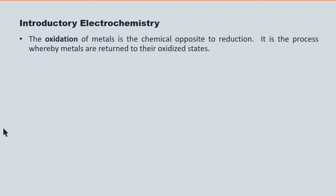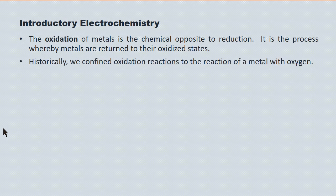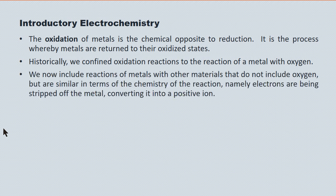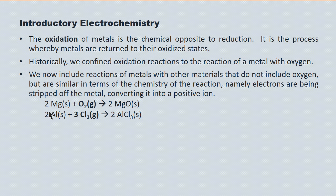The oxidation of metals is the chemical opposite of reduction. It's the process whereby metals are returned to their oxidized states. Historically we confined oxidation reactions to the reaction of a metal with oxygen, but we now include reactions of metals with other materials capable of oxidizing the metal — stripping electrons off it. For example, here's magnesium being oxidized by oxygen, aluminum being oxidized by chlorine gas into the aluminum 3+ ion, and copper being oxidized by bromine into the copper(II) ion.